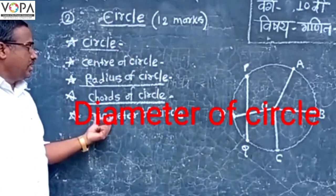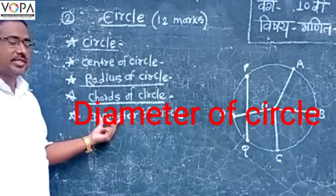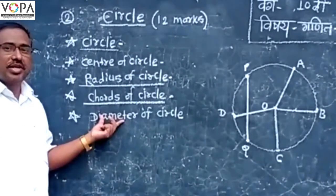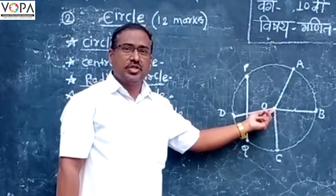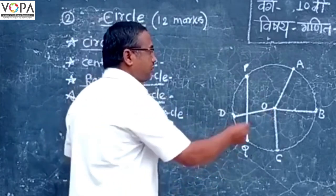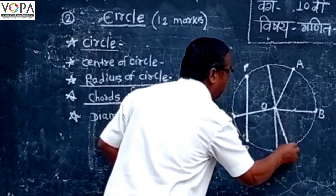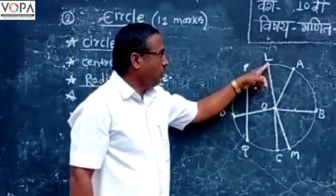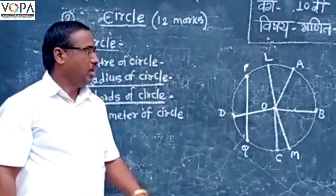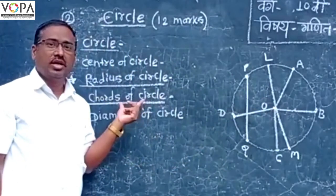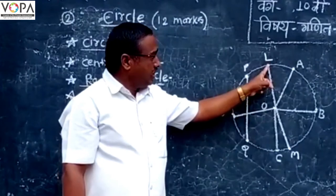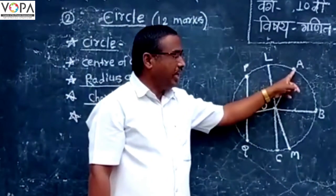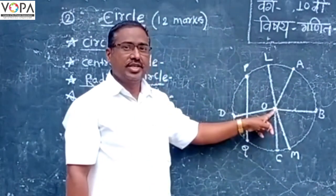The diameter of the circle is the next term. A chord passing through the center of the circle is said to be the diameter of the circle. LM is the chord passing through the center of the circle, therefore chord LM is the diameter of the circle. In the figure, LM is the diameter of the circle, segment PQ is the chord of the circle, segment OF is the radius of the circle, and point O is the center of the circle.